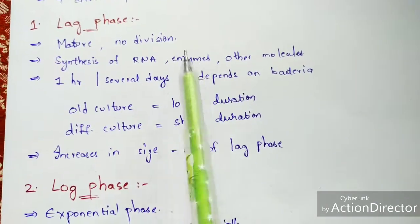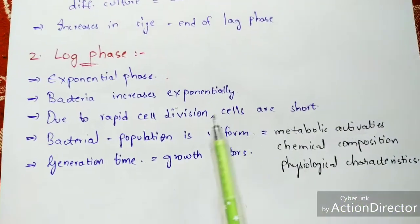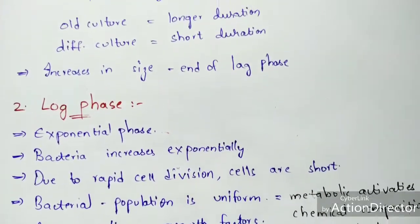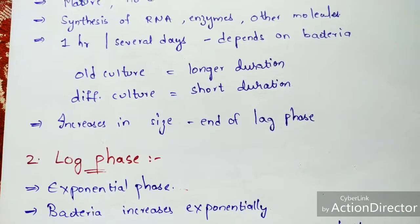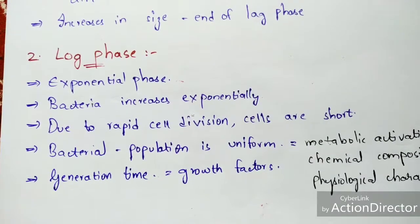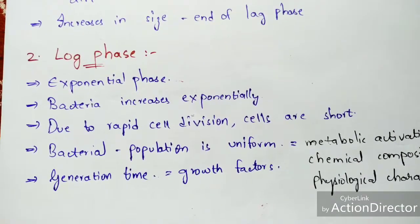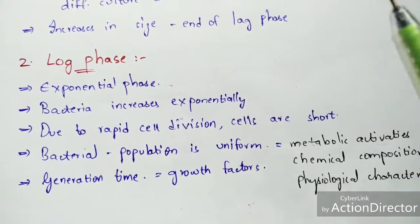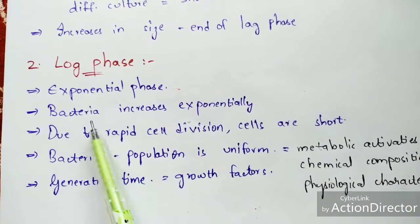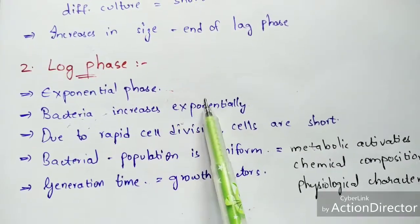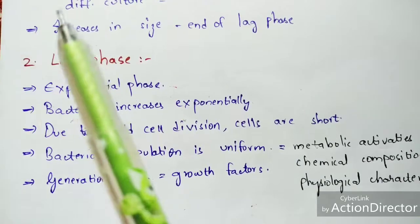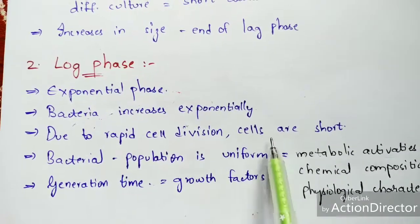When the cell size has increased through the lag phase, the bacterial cell enters the log phase. The log phase is also called the exponential phase because rapid cell division takes place. After maturity, the cell undergoes binary fission to produce daughter individuals rapidly. The number of bacterial cells increases exponentially due to this rapid cell division process.